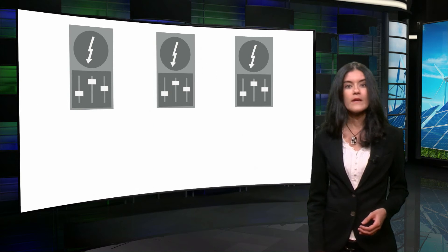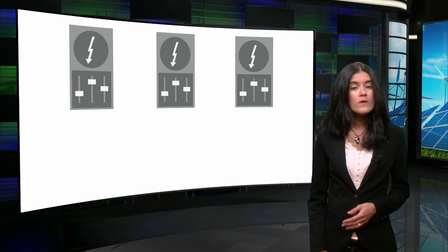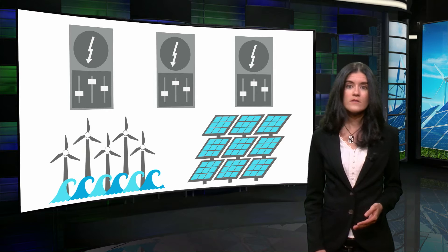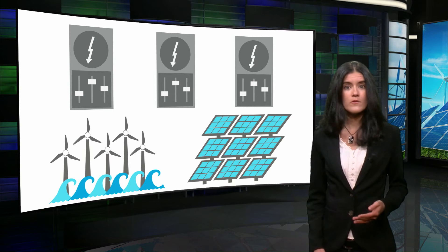The primary, secondary, and tertiary control should then account not only for the changes in the demand, but also for changes in the generation, especially coming from the uncontrollable sources.